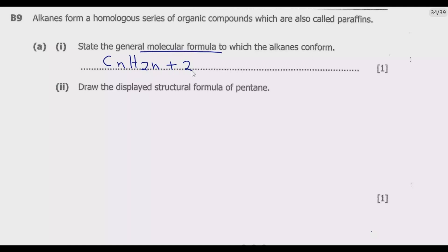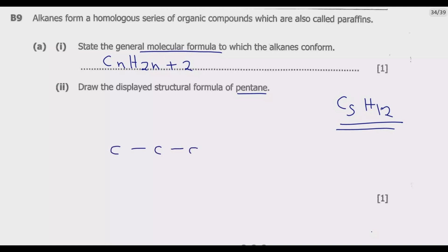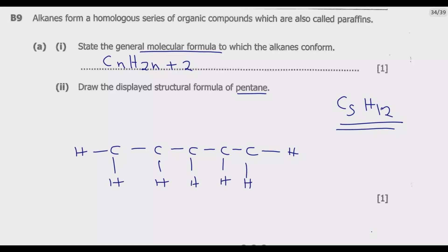Part 2: Draw the displayed structural formula of pentane. Pentane has 5 carbons, so we have C₅H₁₂ — that's 5 times 2 equals 10, plus 2 equals 12. We start with five carbon atoms in a chain, and because it is saturated we add hydrogens on each side, giving us all 12 hydrogens in the correct positions.